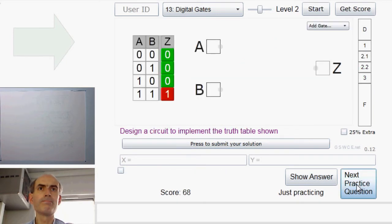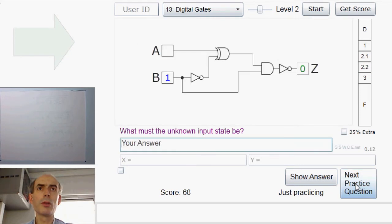I'll just do one more. Oh, that's too easy. It's just an AND gate. Done these, done these.